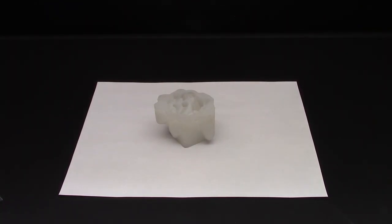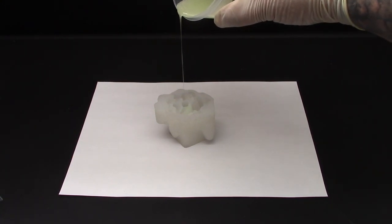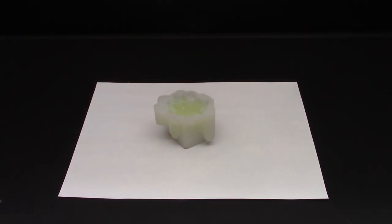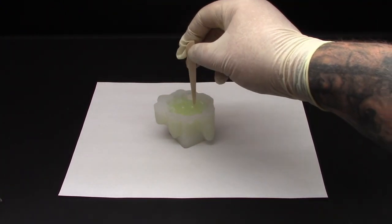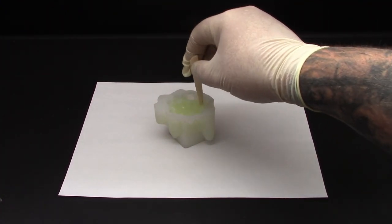Then we filled our moulds. Using a pointed tool or cocktail stick, gently agitate any air bubbles out of the resin. Do this especially if the mould has awkward angles or undercuts.